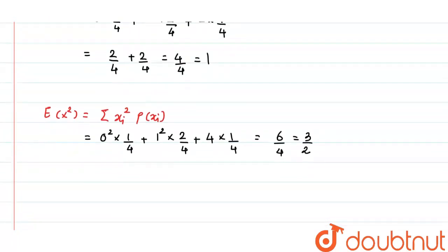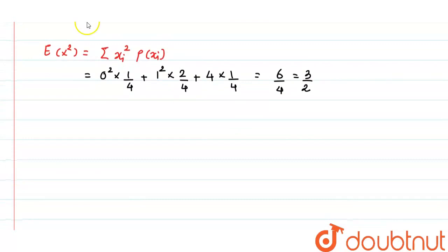Now, we need to find out variance and formula of variance is E of X square minus E of X whole square. So, plug in the value.